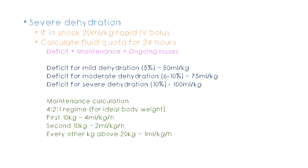The maintenance is calculated using the 4-2-1 regime, and note that this must be calculated for ideal body weight. For example, if an obese child's actual weight is 45 kg but ideal weight is 35 kg, we use 35 kg. You can get ideal body weight from weight-for-height graphs. The 4-2-1 regime states: for the first 10 kg, give 4 ml/kg/hour; for the second 10 kg, give 2 ml/kg/hour; and for every kilogram above 20 kg, give 1 ml/kg/hour. Since all values are per hour, multiply by 24 for the daily total.